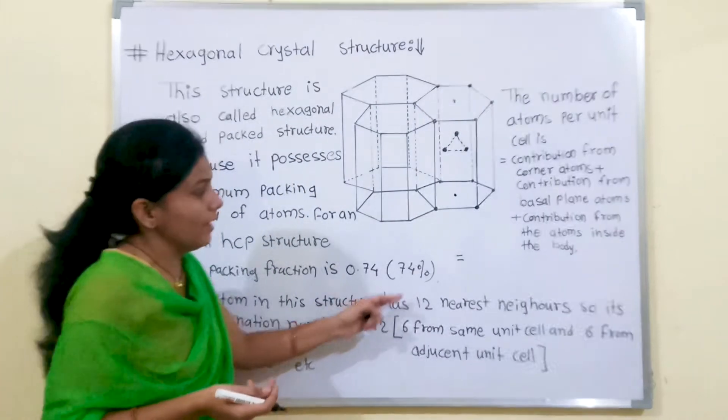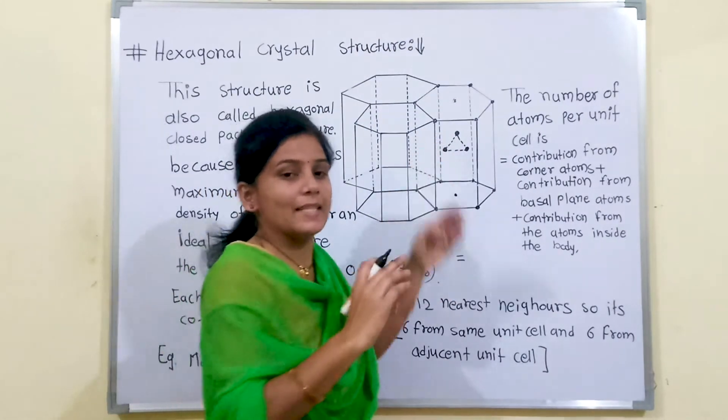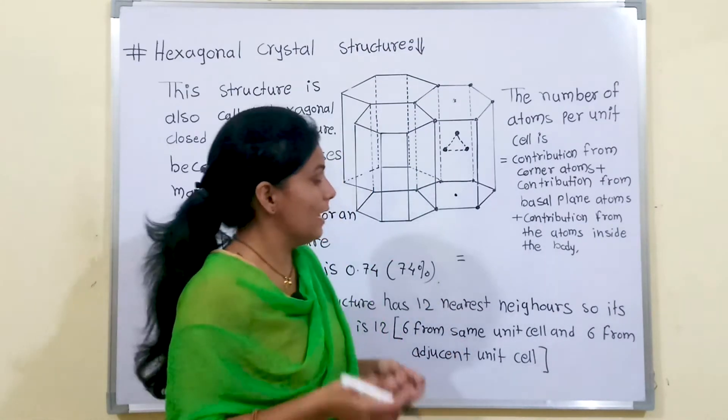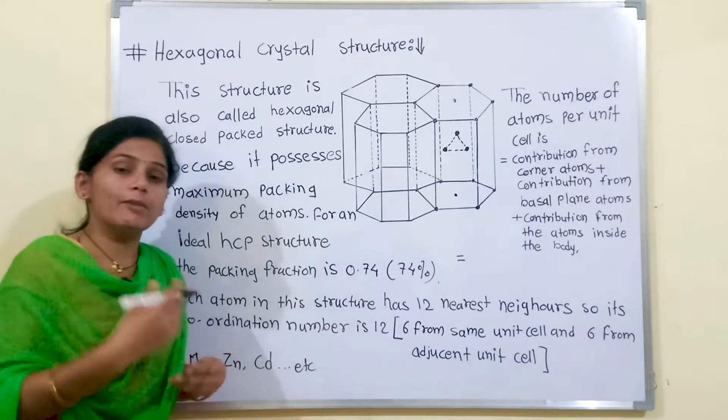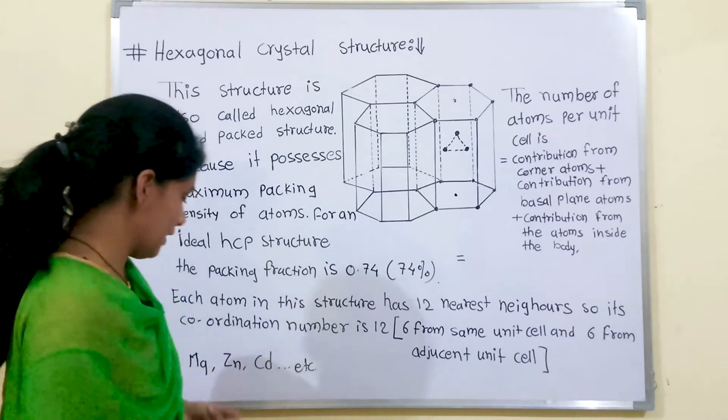If we consider adjacent unit cell there are also 6 nearest neighbors of this particular atom. 6 from the same unit cell and 6 from the adjacent unit cell, that means the total coordination number is 12 for HCP structure.